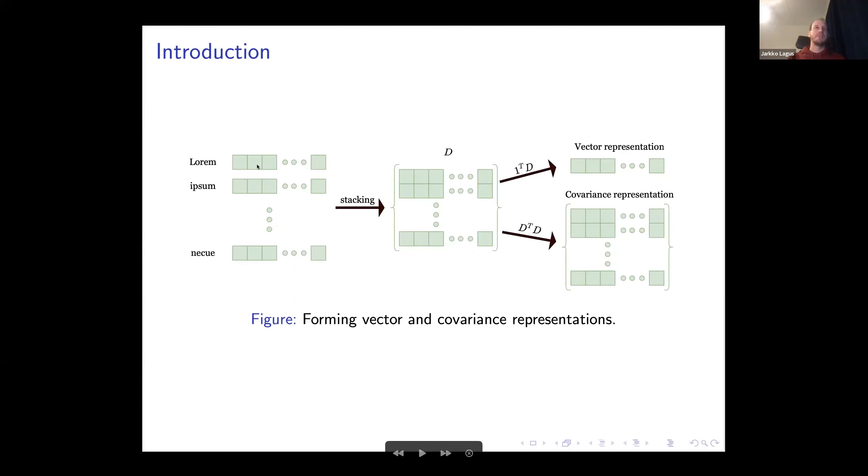This is the basic process. We have the word embeddings, which we stack in the document, and then depending on the pooling function, we either have the vector representation or the covariance representation. Here the focus is on the covariance representation, since these are the matrix representations.